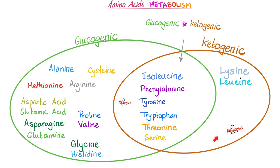Do you remember this chart? We talked about this in my metabolism videos, particularly the video on protein metabolism, proteogenesis, and proteolysis. This was also mentioned in my video on gluconeogenesis. All of these amino acids are glucogenic — they can make glucose. Some amino acids are both glucogenic and ketogenic, so they can still make glucose. But leucine and lysine are purely ketogenic, never glucogenic — they can never raise your blood sugar.